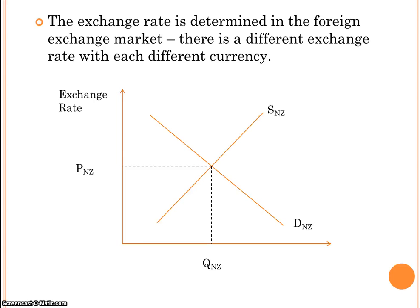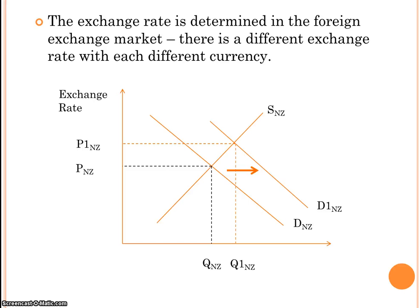The foreign exchange market is not a physical place — it all happens online. Banks trade currencies with each other, and demand and supply determine the exchange rate. On the demand and supply graph, we have the exchange rate on the vertical axis, with PNZ, SNZ, and DNZ to denote that we're talking about the New Zealand dollar. If demand for the New Zealand dollar increases, we end up with a higher exchange rate — and the exchange rate is what has the big impact on our economy.